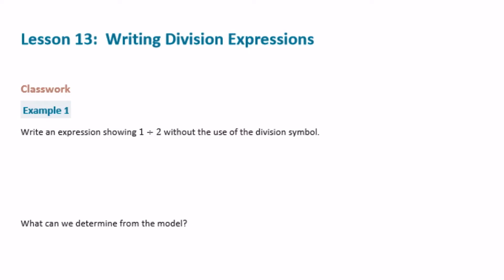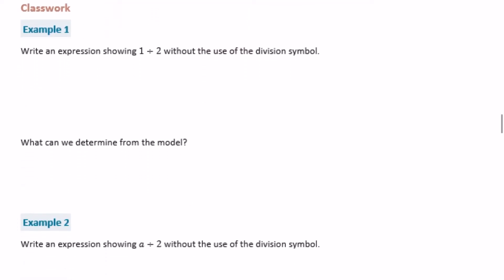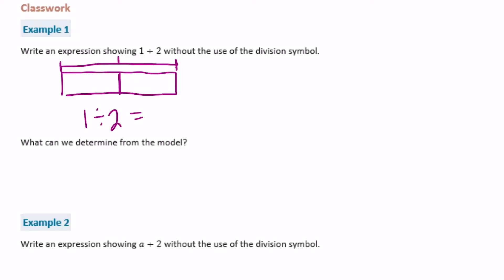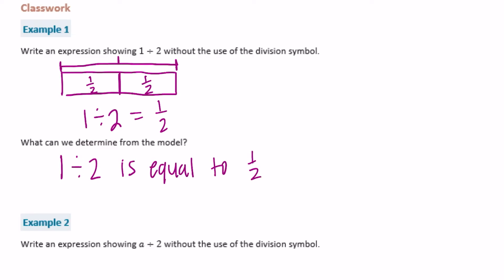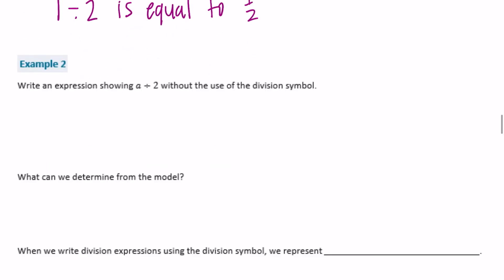6th grade module 4 lesson 13, classwork example 1: write an expression showing 1 divided by 2 without using the division symbol. We'll draw a model first. The whole thing is equal to 1, and we split it into two equal parts. So 1 divided by 2 equals one half, or 1 over 2. From the model we can determine that 1 divided by 2 is equal to 1 half — they're the same thing.